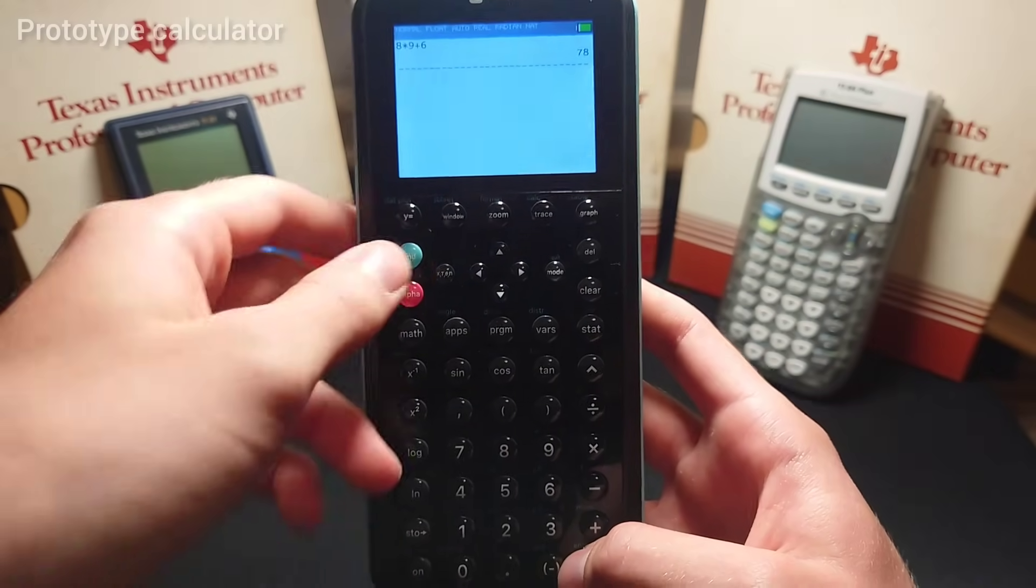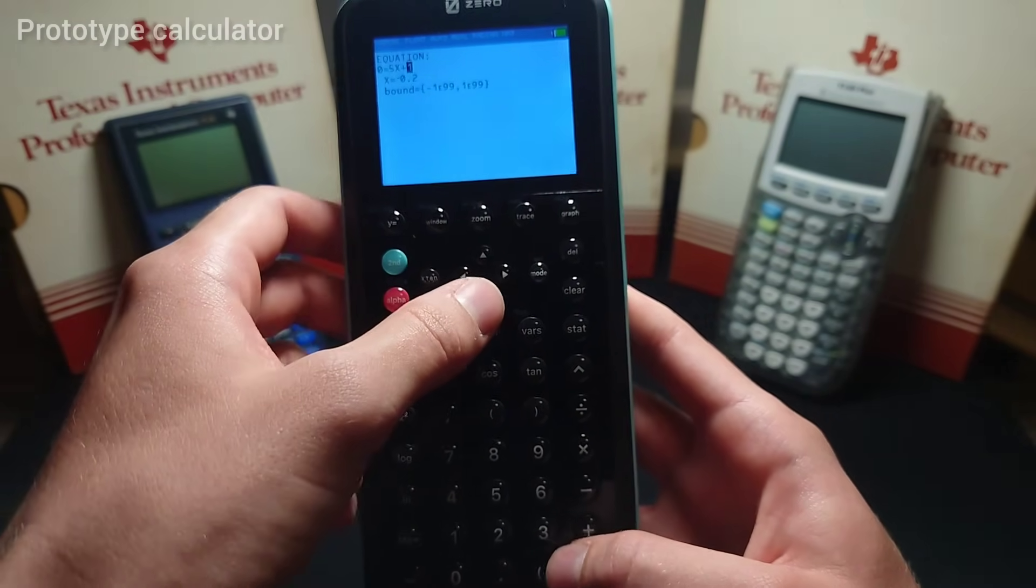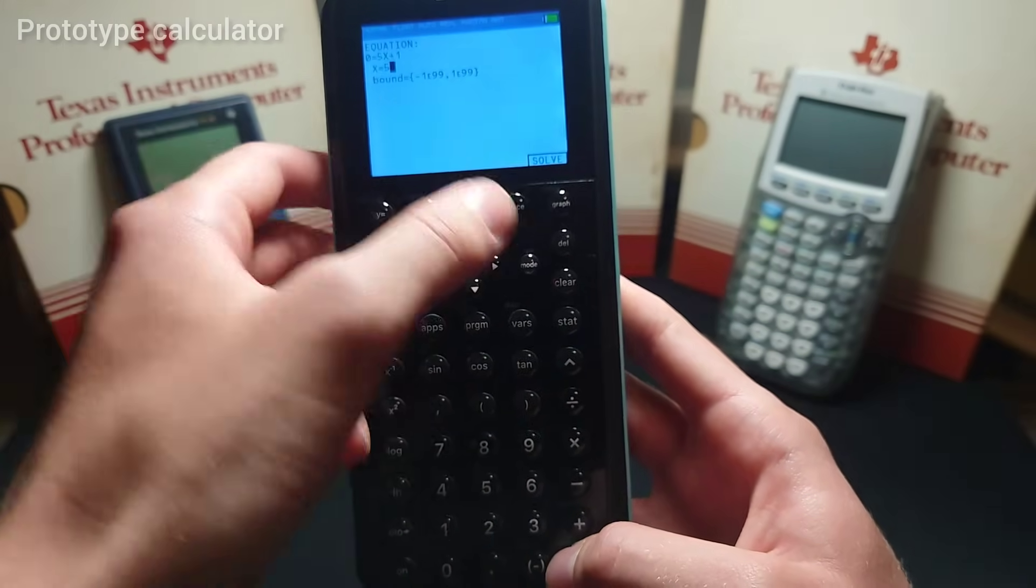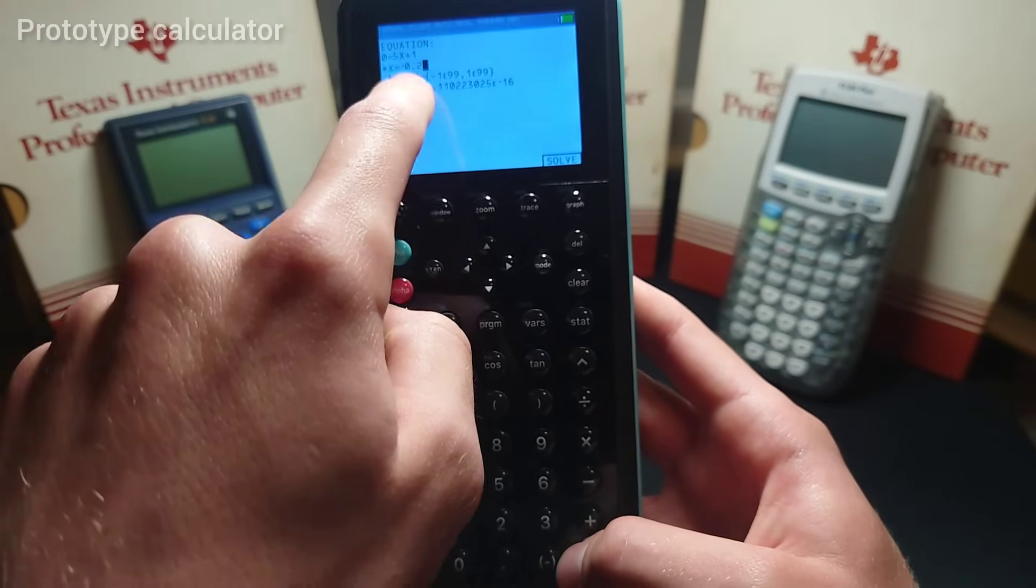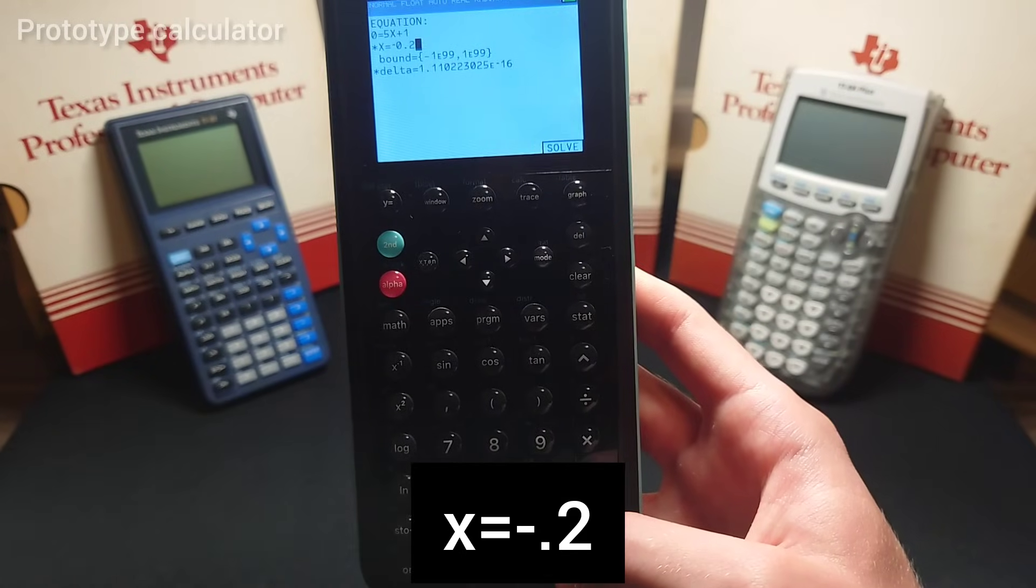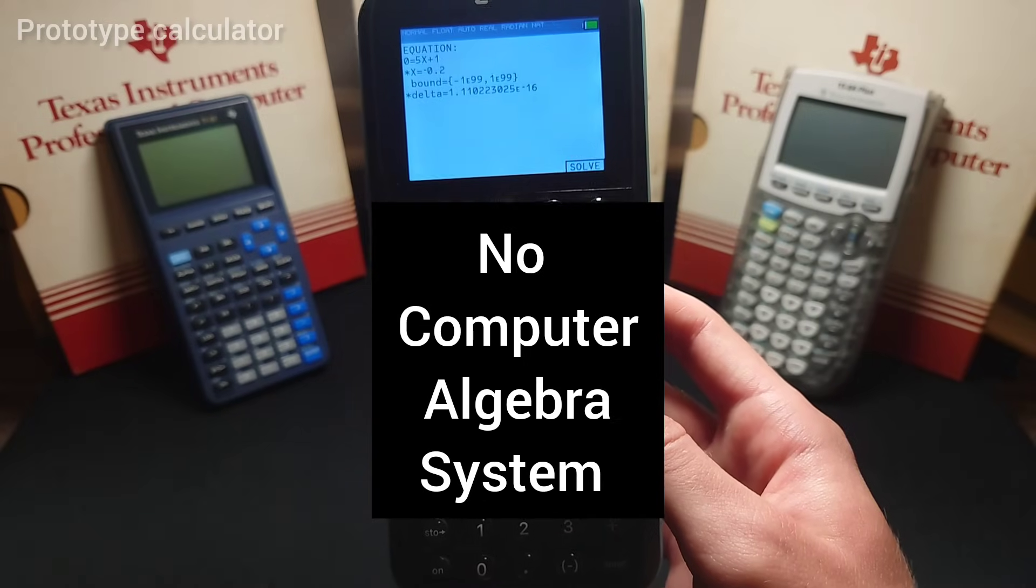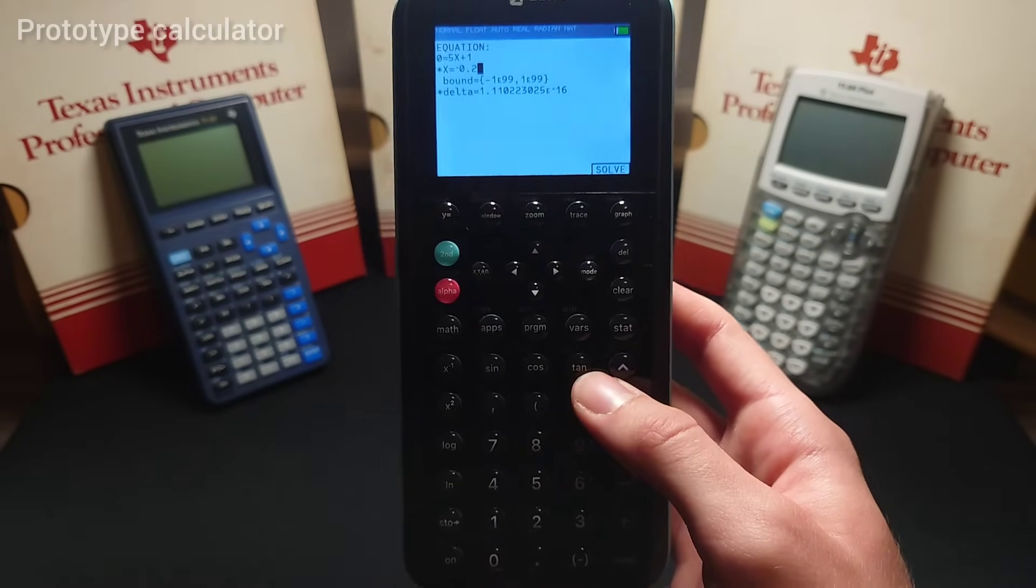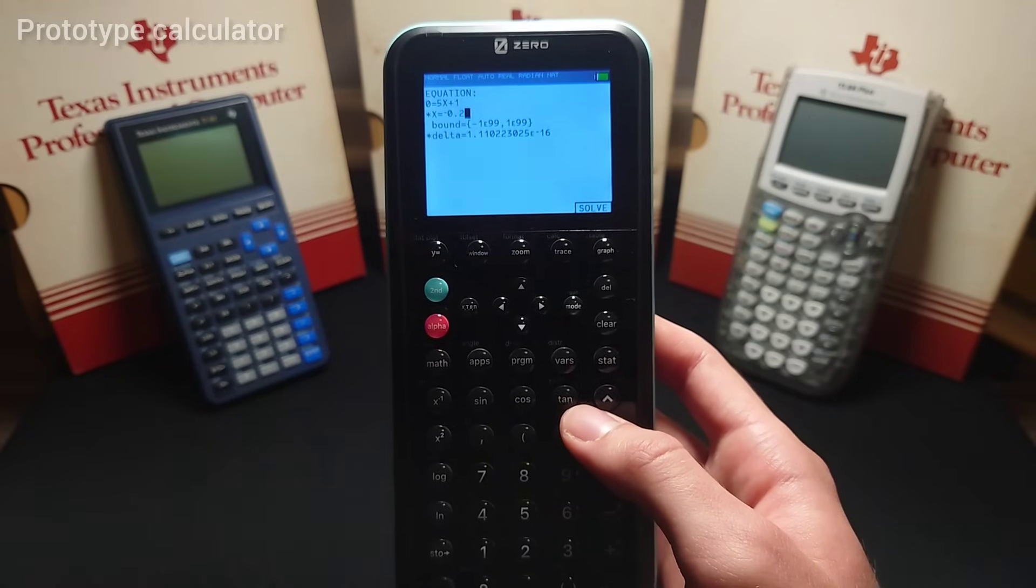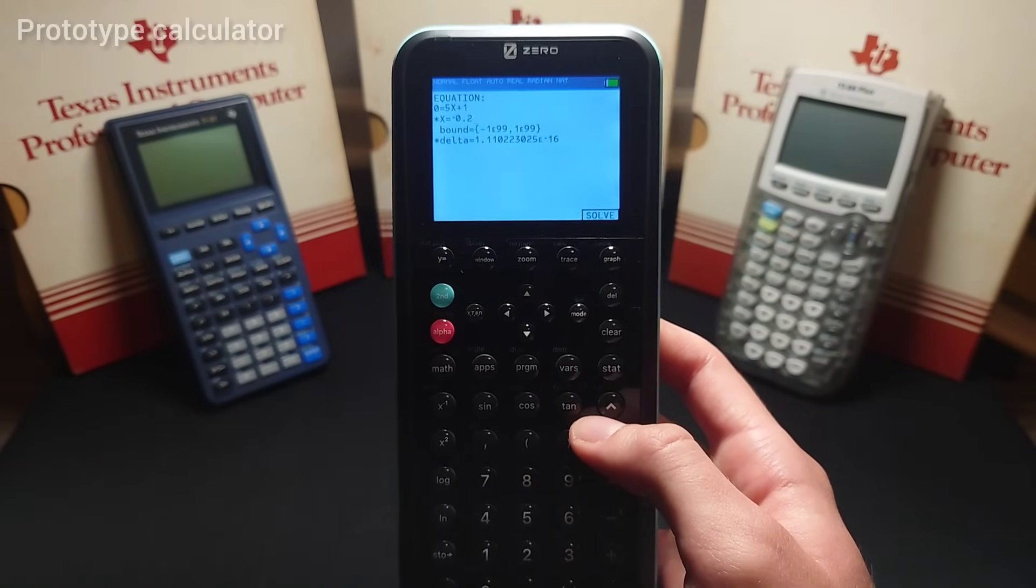A couple last things. While this does have a numerical solver, just like the TI-84 plus CE, so it can solve for X. For example, I'll just change this to 5 as my guess. Click solve, it figures out that 0 equals 5X plus 1. It figured out X equals a negative 0.2. However, it does not have CAS, so it can't handle equations symbolically. And it doesn't have an exact math engine, so it can't display answers in the form of radicals or in terms of pi. The TI-84 plus CE also cannot do that.